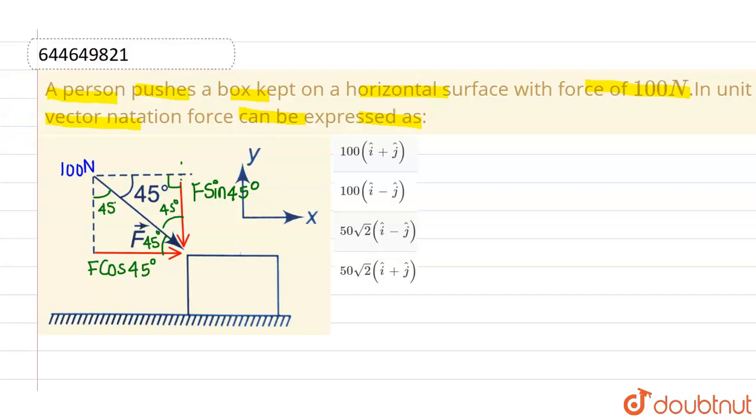Now if I write this force into vector notation, then F cos 45 degree is acting along i-cap, whereas F sin 45 degree is acting along minus y-axis, therefore this can be written as minus F sin 45 degree along j-cap.